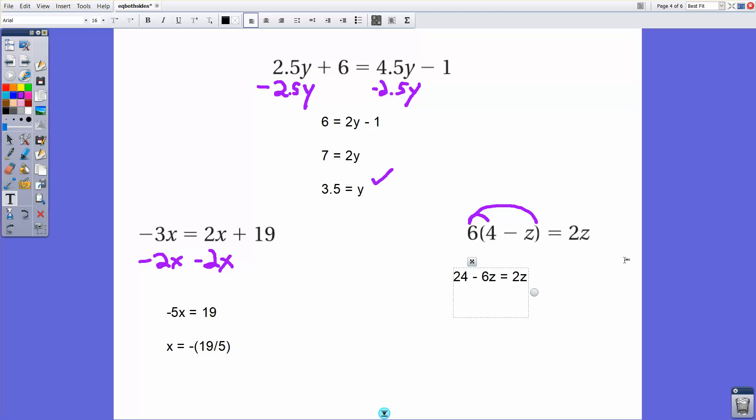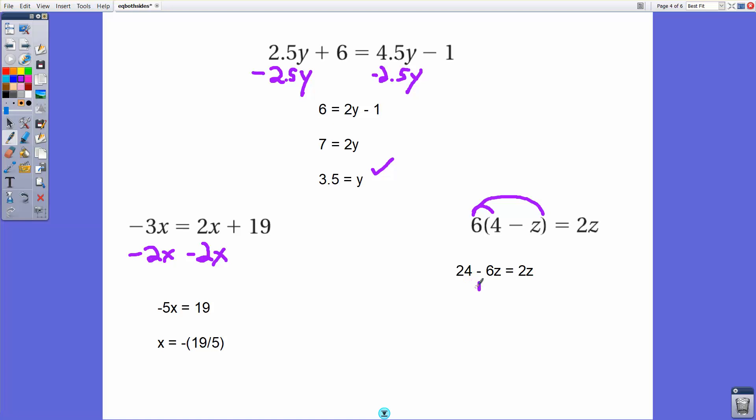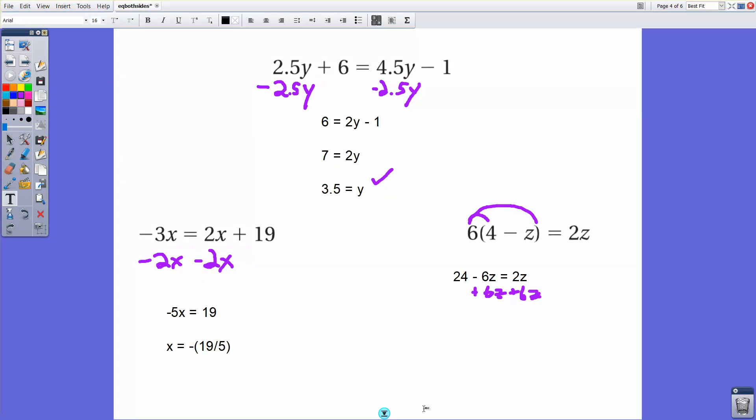Here again, when we have this particular step, we're going to want to add 6z to both sides because the right side has just a z term. So we don't want to move that term. That will equal 8z. So 24 equals 8z, which means that 3 will equal z.